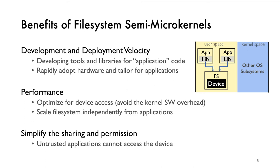There are many benefits for file system semi-microkernels. First, development and deployment velocity: kernel development and deployment are generally slow, whereas more development effort and tooling can be utilized for a user-level file system. Second, contrary to the traditional wisdom that microkernels suffer from large overhead, the semi-microkernel can be carefully specialized for device access and optimized solely for one OS subsystem — the file system — thus realizing good performance. In addition, in modern multi-core computers, the file system semi-microkernel can scale independently from applications by decoupling the execution context from the application, leading to better performance in scaled scenarios.